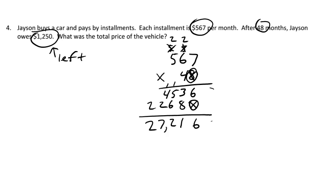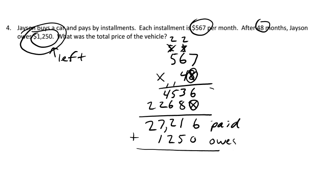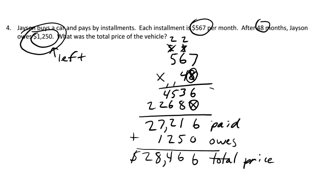So 27,216 is how much Jason has already paid. But he still owes $1,250, so we add that on. The total: 6, then another 6, then 4, 8, 2 — the total price of the vehicle is $28,466. Hopefully you've been stopping the video to check your work against mine. Come with any questions — talk to you later, bye!